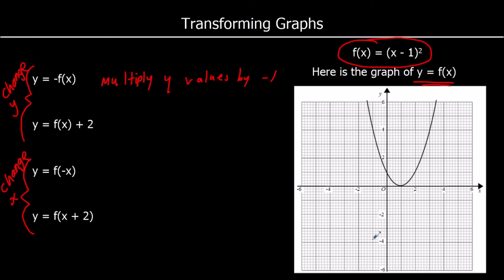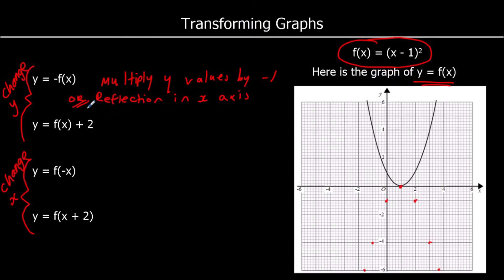Looking at the graph, the point (-1, 4) becomes (-1, -4), (0, 1) becomes (0, -1), (1, 0) stays as (1, 0), (2, 1) becomes (2, -1), and (3, 4) becomes (3, -4). So this graph looks like a reflection in the x-axis. Therefore y equals minus f of x multiplies all y values by negative 1, which is a reflection in the x-axis.